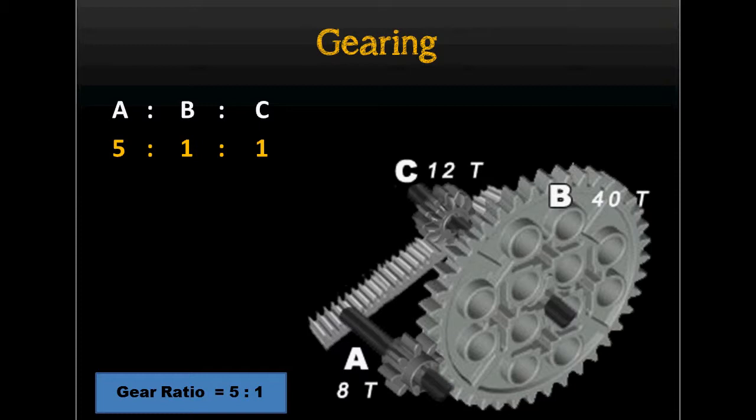We get the gear ratio between A to B is 5 to 1, and B to C is 1 to 1. This means the gear ratio between A to C is 5 to 1. The conclusion is that 5 rotations of the NXT motor equals 1 rotation of the gear on the rack.